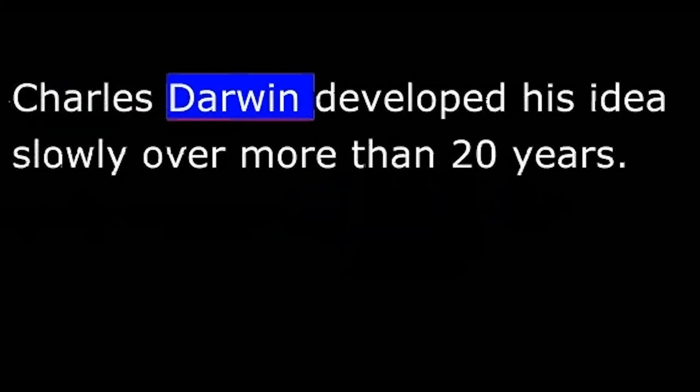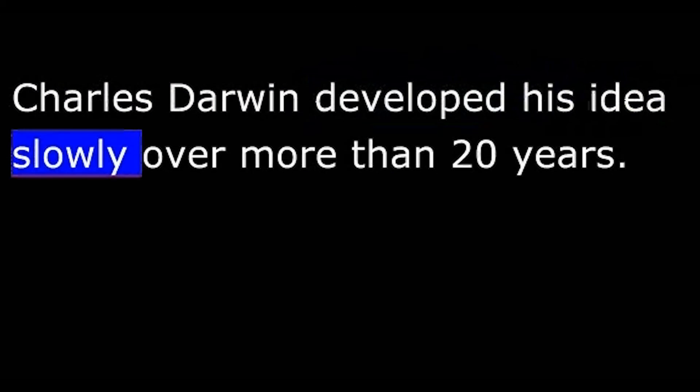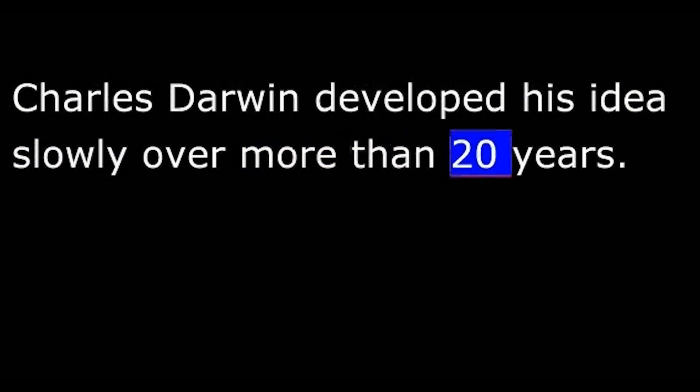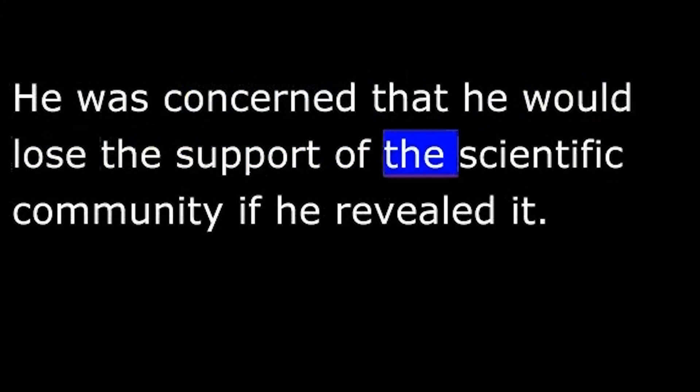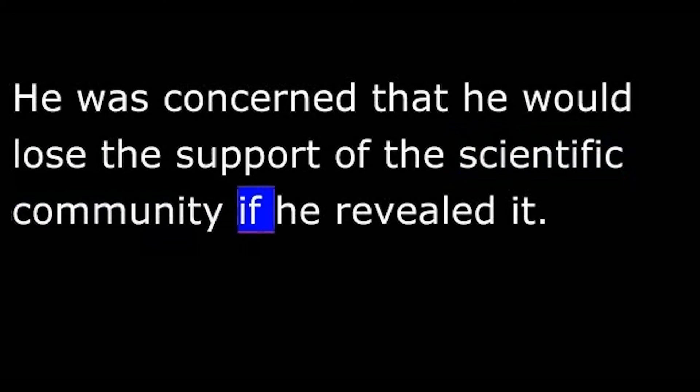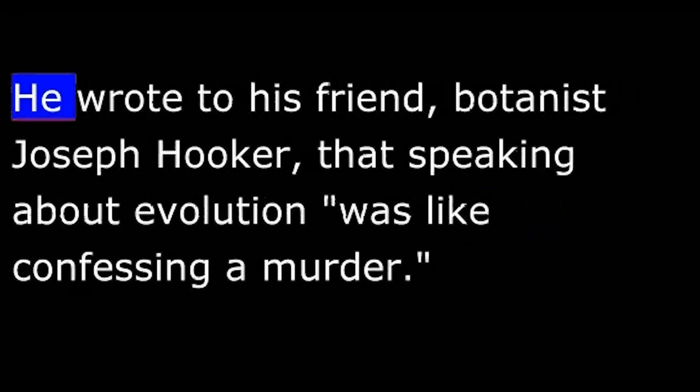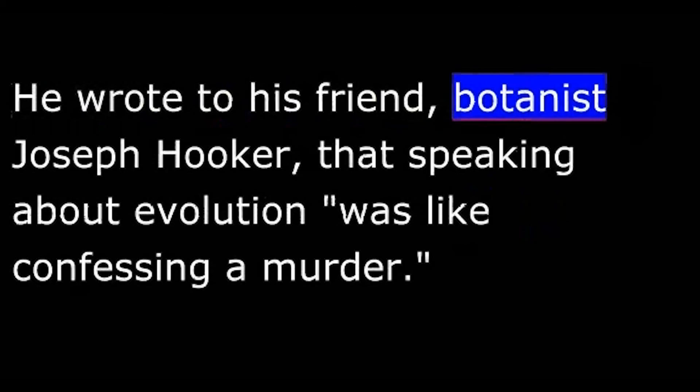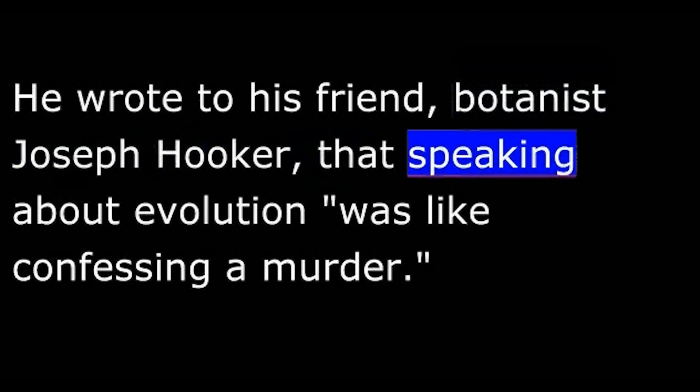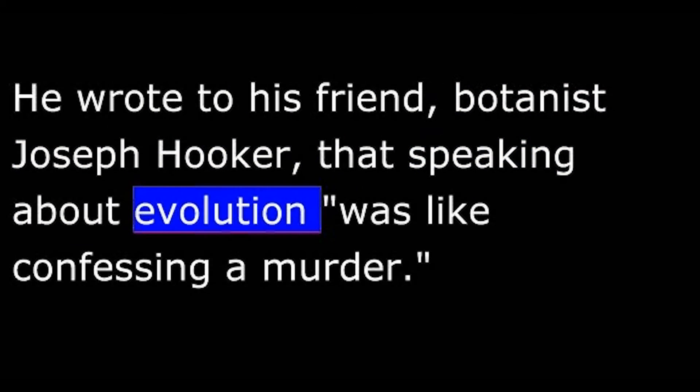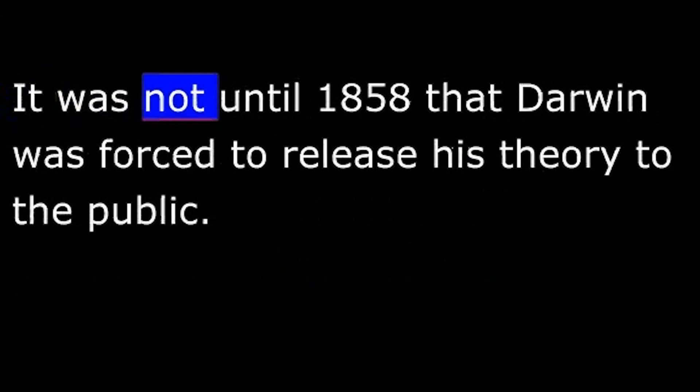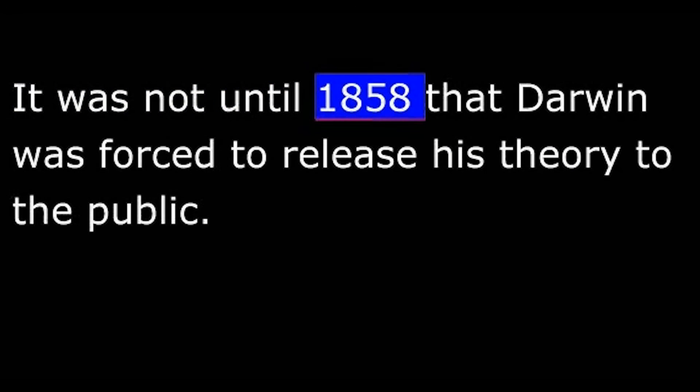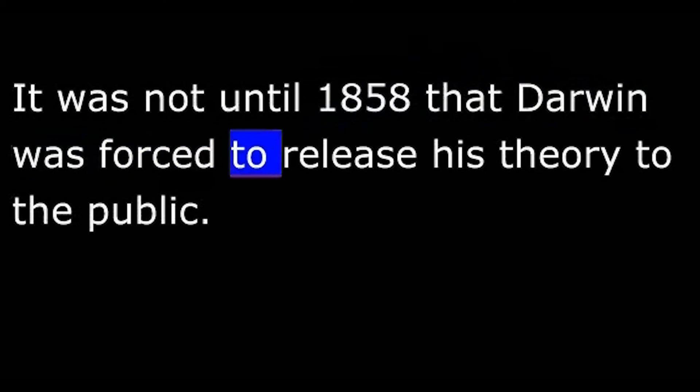Charles Darwin developed his idea slowly over more than 20 years. He was concerned that he would lose the support of the scientific community if he revealed it. He wrote to his friend, botanist Joseph Hooker, that speaking about evolution was like confessing a murder.